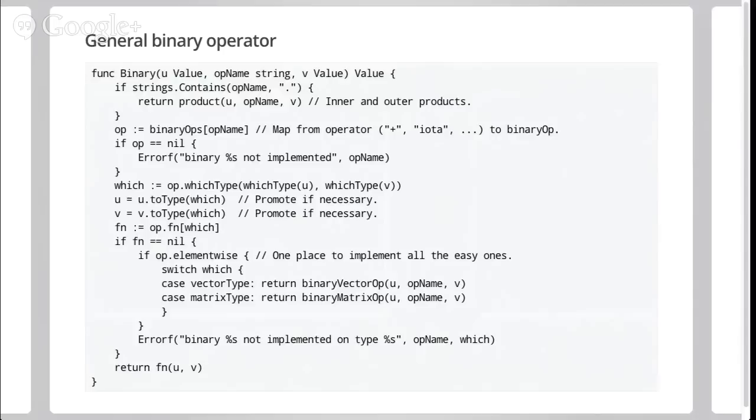Now, here's the code, the general binary operator. So this is all you need to do now in Ivy to implement. This is done once. So given I have a binary value, value and value, and here the operand, which is stored as a string, could be plus, could be max, could be iota, whatever. If there's a dot, then it's either an inner product or an outer product, so let that happen. Now I look up a map from name to binaryOp table, which I showed you an element from before. If that's not there, it means that binary is not implemented, it might not be there. Otherwise I ask which type do I want to implement this in, promote the two operands, and then look up the function for that type pair from the table. If that's nil, but it's elementwise, well that's easy, we just do it elementwise. Otherwise we have an implemented binary, but not for the types we have to do now. And finally we call it. So you've now seen essentially the entire implementation of this language.